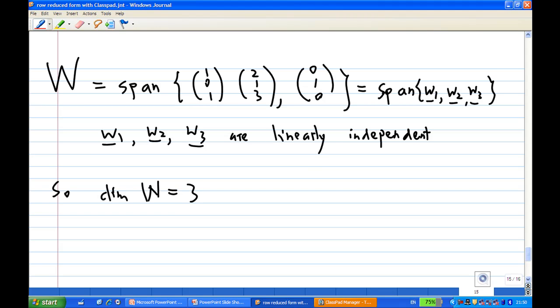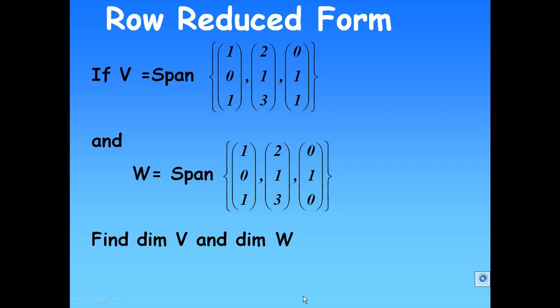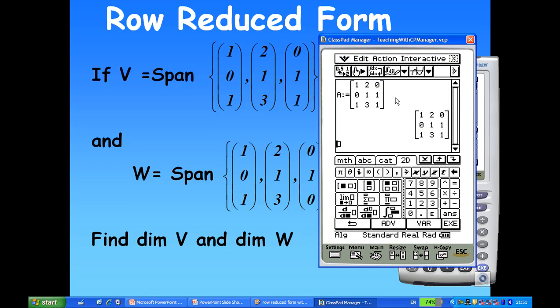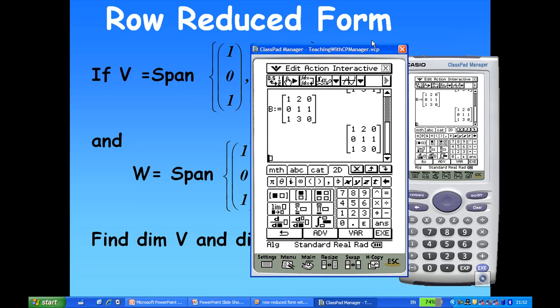We can also use the ClassPad to find the row reduced form. Let me show you how. So I'm going to invoke my ClassPad. Then I'm going to enter another matrix B now. So let me call B equal to, let me modify this matrix by dragging it down. This time, (1,0,1; 2,1,3; 0,1,0). That is my matrix B.